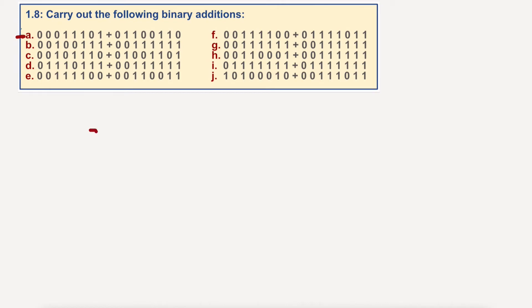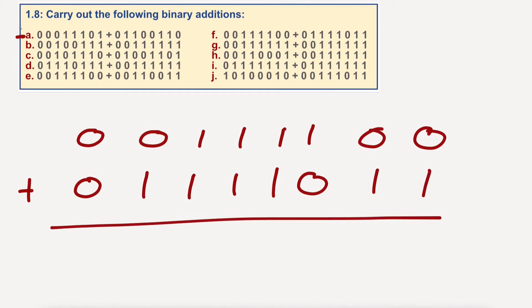So, F, I'm going to go zero, zero, one, one, one, one, zero, zero. Space them out a little bit. And we've got plus zero, one, one, one, one, zero, one, one.